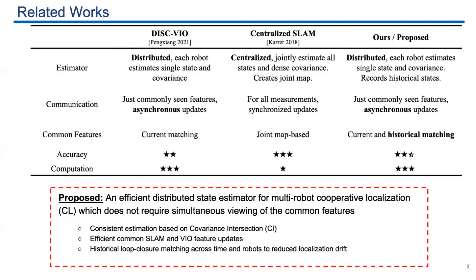The second one is centralized SLAM algorithms. There exist several centers in this algorithm that generally estimate all the robots' state and the dense covariance. It creates the joint map for the whole group. So it requires the robots to communicate with the center during each update and propagation, and the measurements will be processed synchronizedly. This will give us the best accuracy, but its lack of efficiency is not suitable for large robot groups.